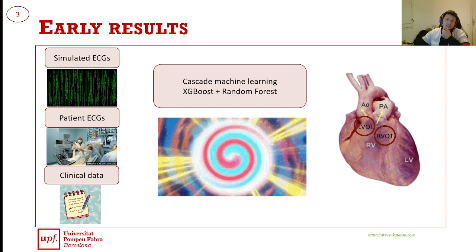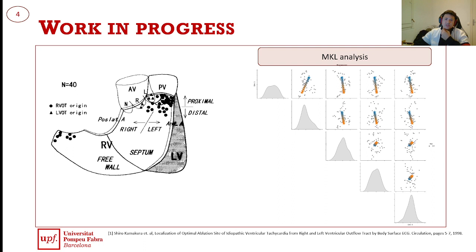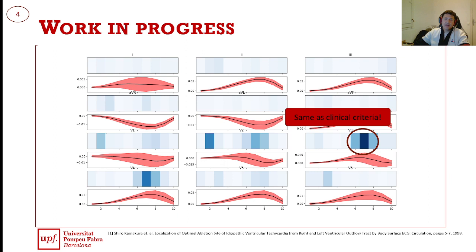The next steps are related to identifying the specific site of origin — not only if it's in the right or the left ventricle, but in which specific part the site of origin is. I'm also performing multiple kernel learning analysis to try to find patterns in the data, and I'm analyzing the models to try to find patterns that have certain clinical validity. That's all for now, and thank you.